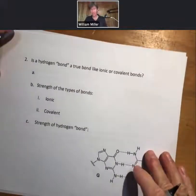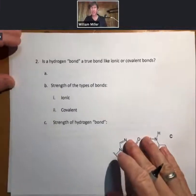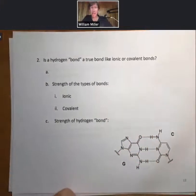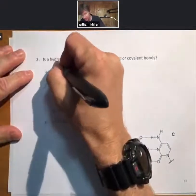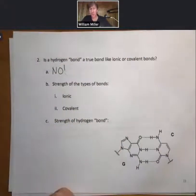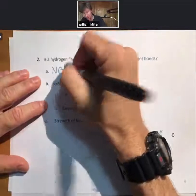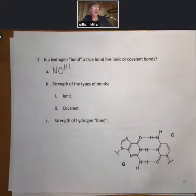Now, is a hydrogen bond a true bond like ionic or covalent bonds? The first thing I'll write is, no. With an exclamation point, maybe two, maybe three. So it is not a type of bond. Chemists do not consider it a bond in general. And we will talk about why it's called hydrogen bonding in a minute.